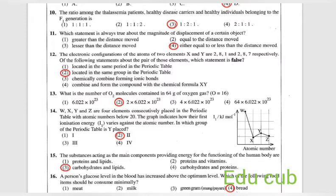Fourteenth question: W, X, Y and Z are four elements placed in the periodic table with atomic number below 20. The graph indicates how their first ionization energy I1 varies against the atomic number. In which group of periodic table is Y placed? We know the simple thing that ionization energy in first group is very low, so X must be the first group element, then Y should be the second group element. Answer is the second one.